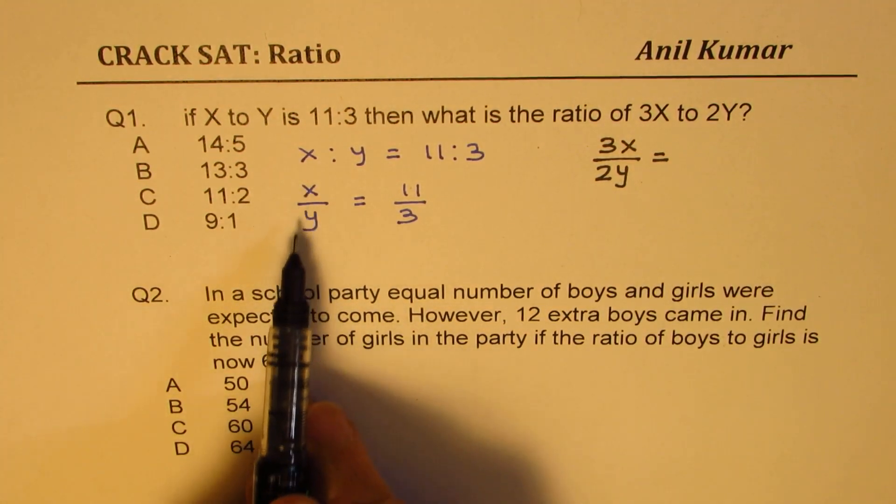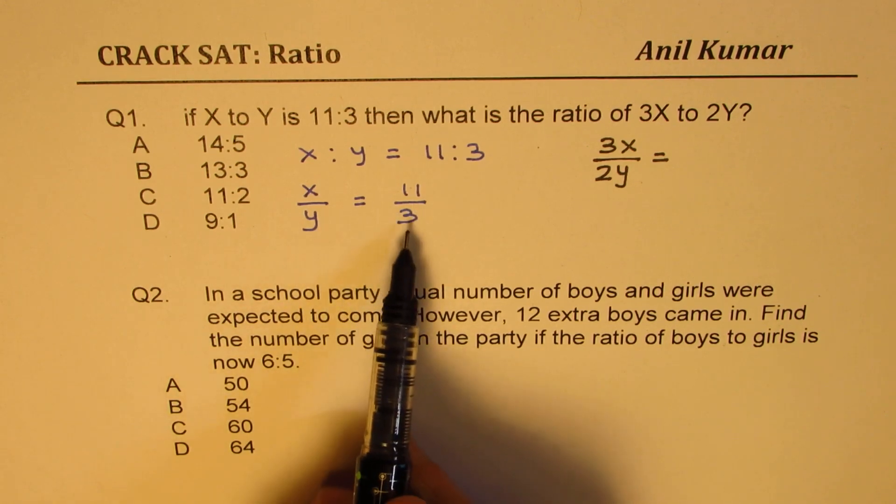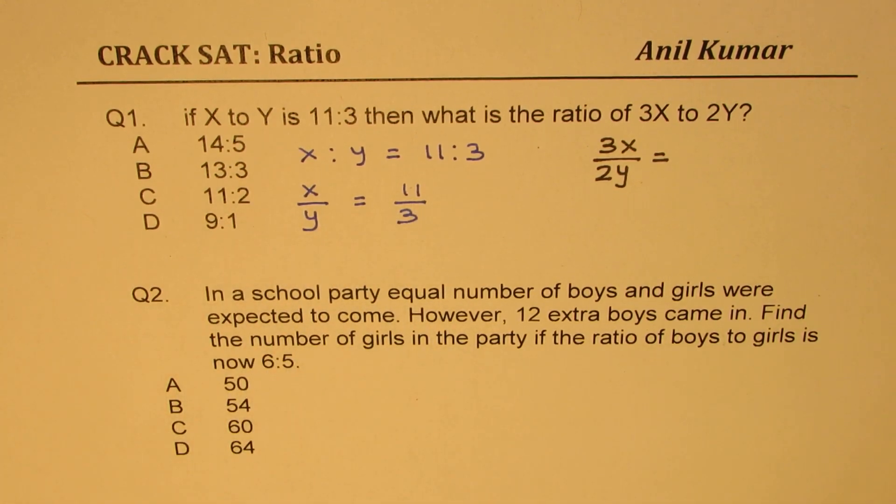Now if you look into this particular ratio on the left side, we can always write X in terms of Y, right? If I cross multiply, see what happens.